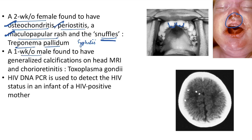Case: 1-week-old male found to have generalized calcifications on head MRI and chorioretinitis — congenital toxoplasmosis caused by Toxoplasma gondii. In this case there will be generalized calcifications and chorioretinitis.